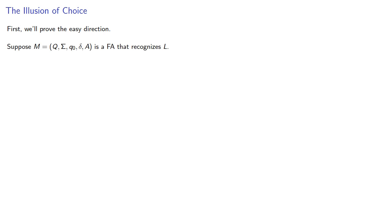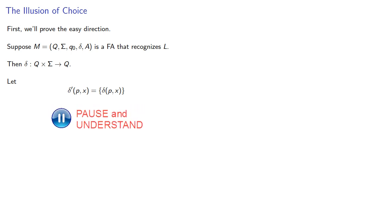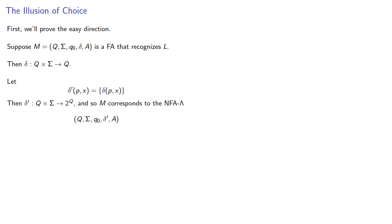First we'll prove the easy direction. Suppose we have a finite automaton that recognizes our language. Then we have the transition function that takes us from the Cartesian product of states and symbols to the set of states, and we'll define a new transition function which will output the set that includes just that state. Our new transition function goes from the set of states and symbols to the set of subsets, and so M corresponds to an NFA-lambda.